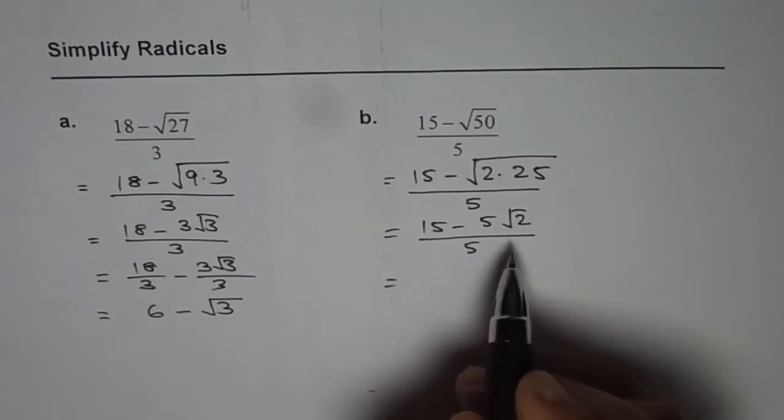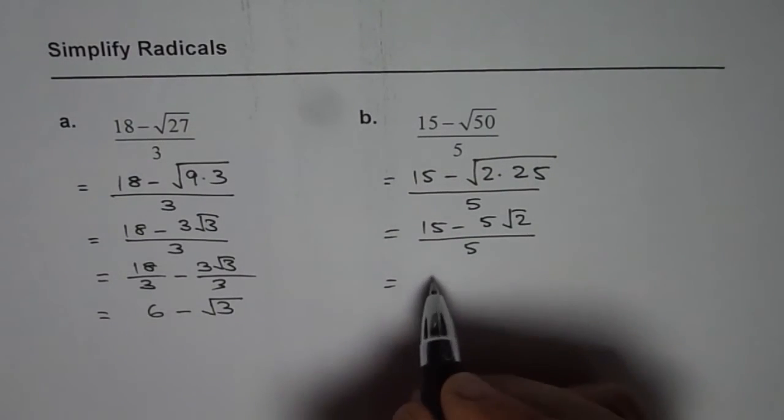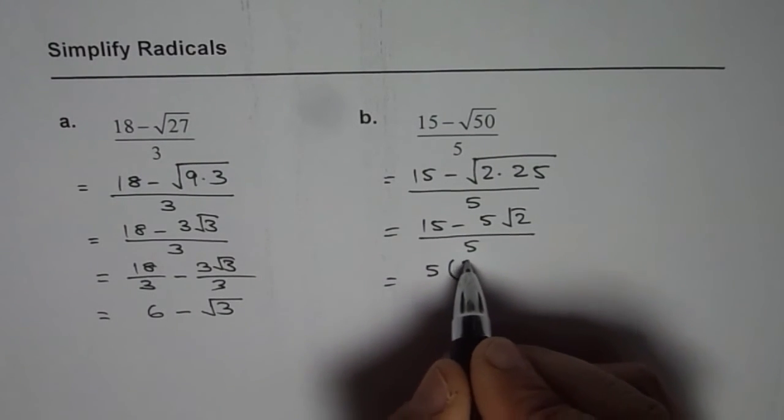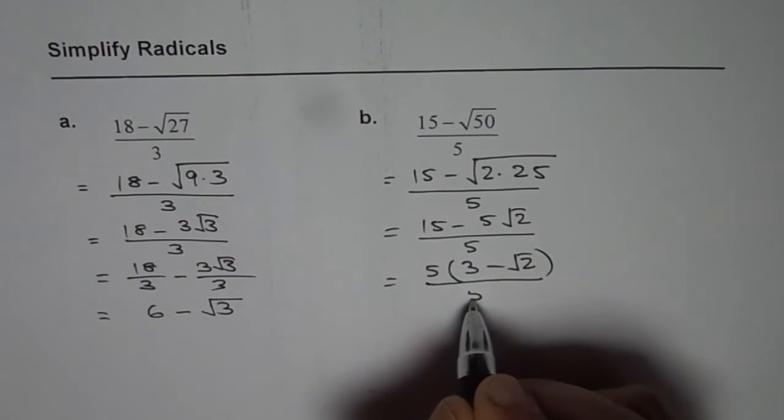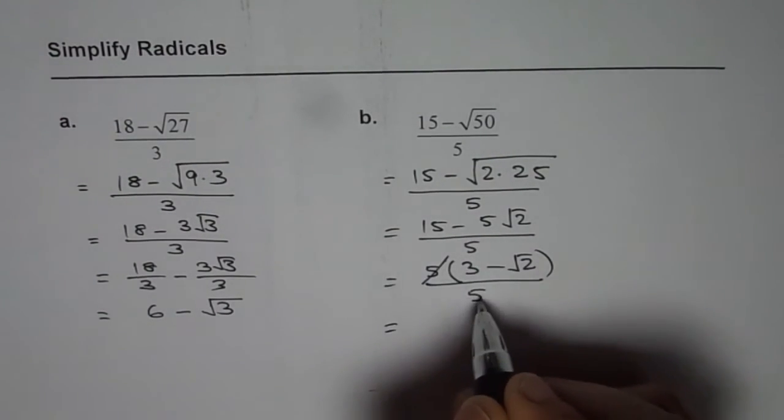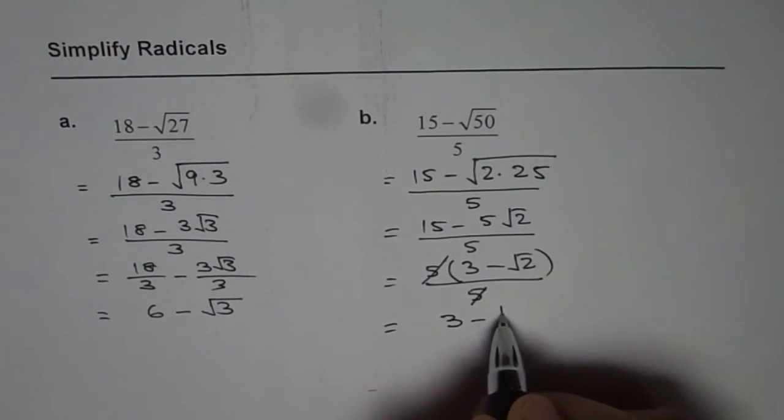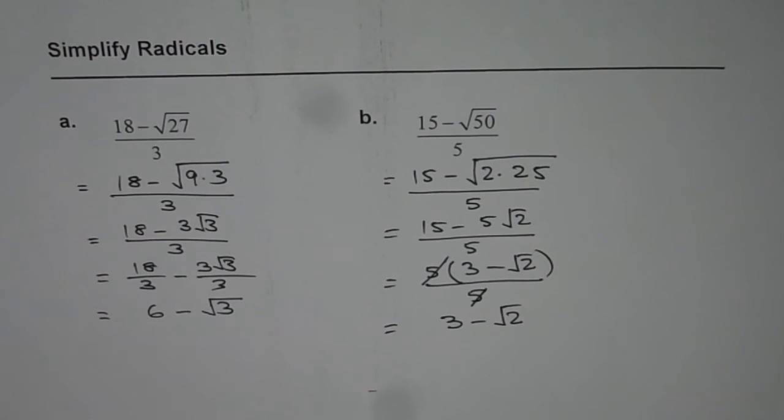Now here again, we can actually cancel 5 and this time I'll teach you factoring techniques. So we can factor 5, we get 3 minus square root 2 in the bracket divided by 5. Now we can cancel 5 and we get 3 minus square root 2 as our answer.